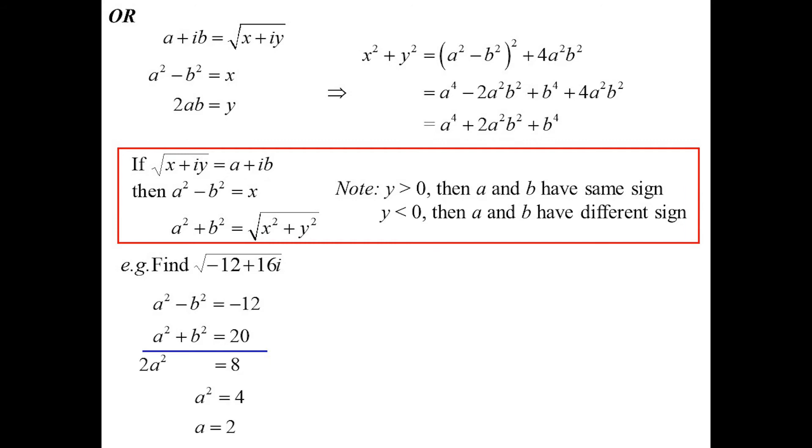And therefore b is 4. Bang, there's the answer. A lot quicker. In fact, you'll even see some people call this, oh, by inspection. Because I go, I'll just do that in my head. 2 and 4.